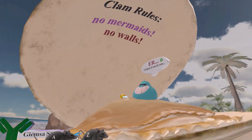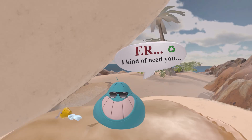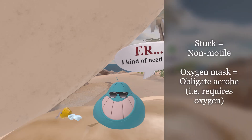You may have noticed this interesting guy in the middle of the clam over here. This guy is stuck inside the clam, which reminds us that Chlamydia is non-motile — it doesn't move. He also likes to keep his oxygen mask around, and that's because he relies on oxygen, which reminds us that Chlamydia is an obligate aerobe. It requires oxygen for growth.